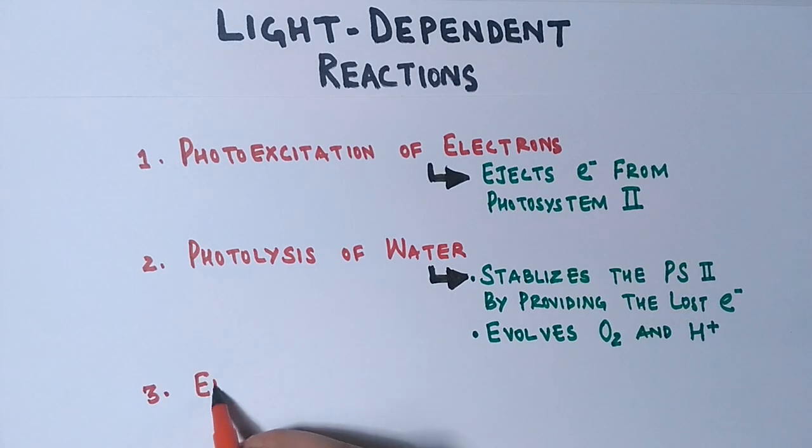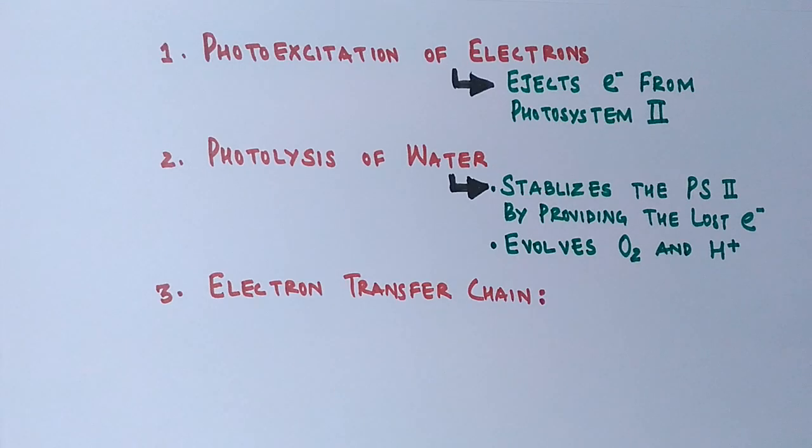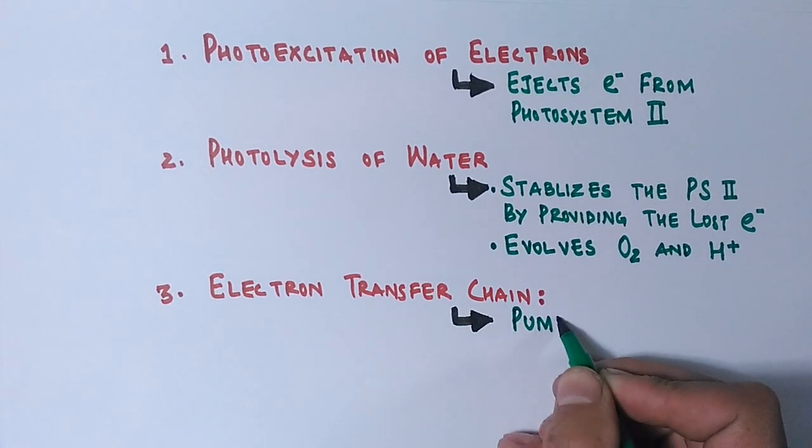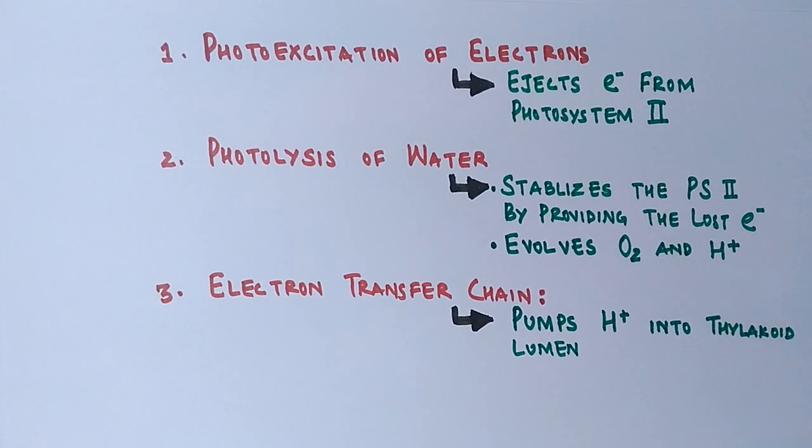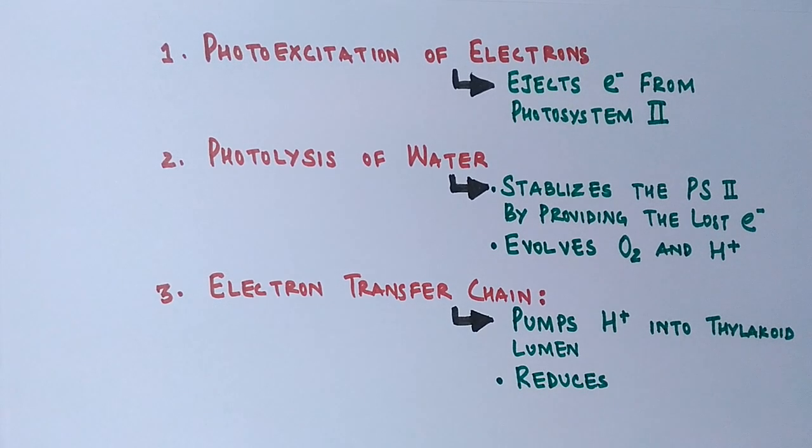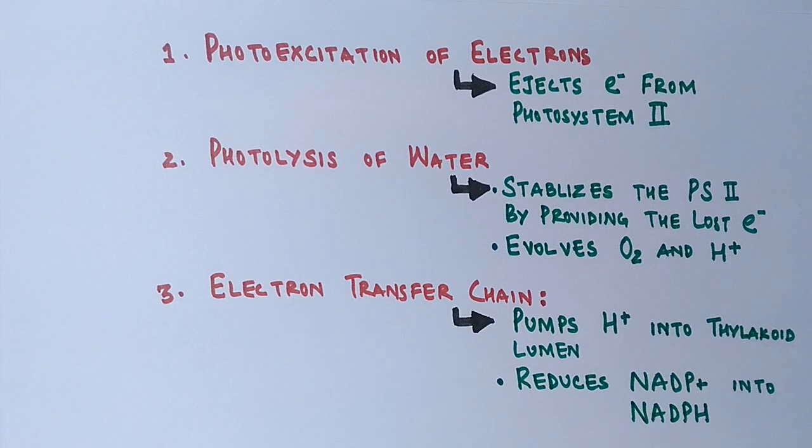Then we have the electron transport chain. In ETC, the ejected electron from photosystem 2 goes through the membrane via electron carriers. The function of ETC is to pump protons into the lumen from stroma. The second thing is that it reduces NADP+ into NADPH.